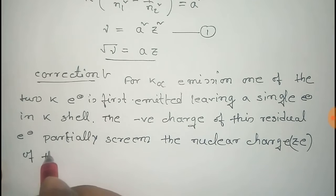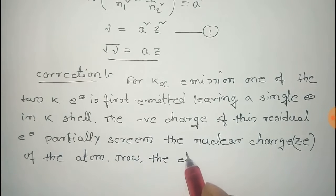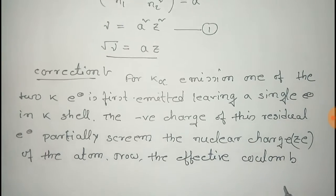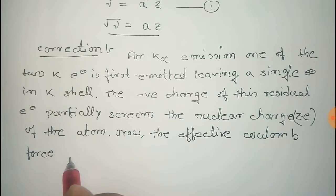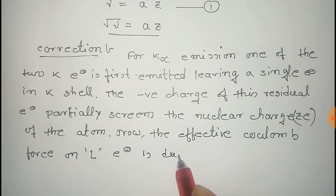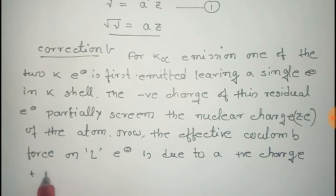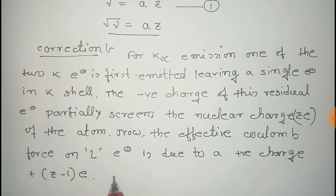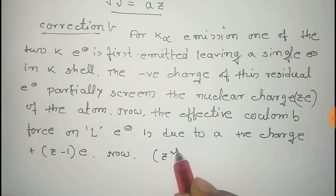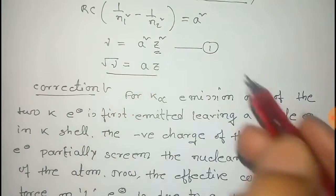Due to this screening effect, the effective Coulomb force on the electrons of the L shell is due to a positive charge decreased by e, giving an effective nuclear charge of (Z − 1)·e. Therefore we replace Z² with (Z − 1)² in our equation.